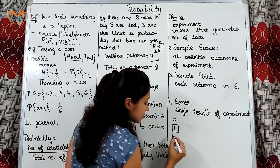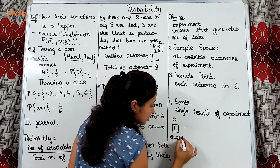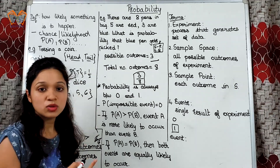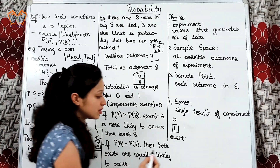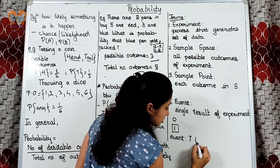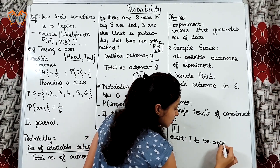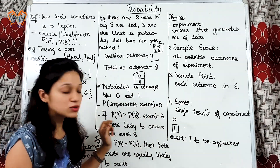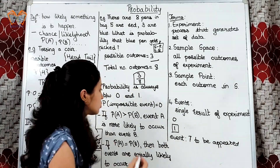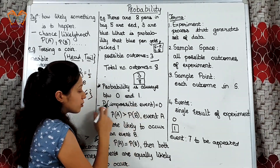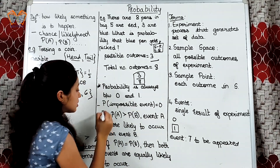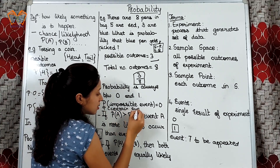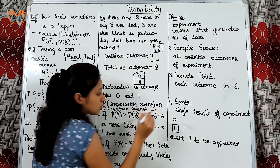And probability of an impossible event is equal to 0. This means that if there is an event — say, whenever a dice is rolled, we want number 7 to appear. But, as we know, the numbers on a dice are between 1 to 6, so 7 cannot appear. That is an impossible event, and the probability of an impossible event is always equal to 0. We can also write: probability of a certain event is equal to 1.